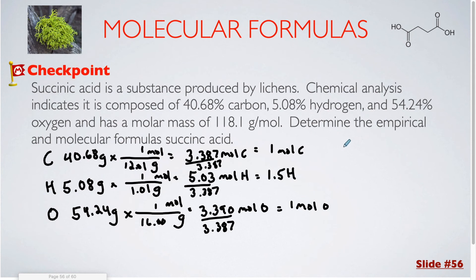So that gives me a formula of CH1.5O. Just like in the other examples that we've seen, we can't leave this as a 0.5. So I'm going to multiply each of these subscripts by 2. I'm going to call that C2, H3, O2. So this is my empirical formula.